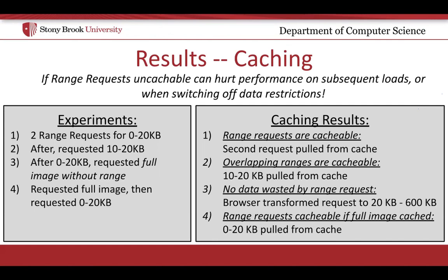Another necessary point of evaluation for BrowseLite is how it affects caching of contents. Specifically, if range requests introduced by BrowseLite are not cacheable, it will actually hurt page performance and data savings for pages under hot connections. However, using four distinct experiments with range requests and caching, we found that not only are range requests cacheable, but the browser will actually rewrite range queries to only fetch the remaining bytes that are not in its cache. This means that BrowseLite should not hurt caching while browsing.